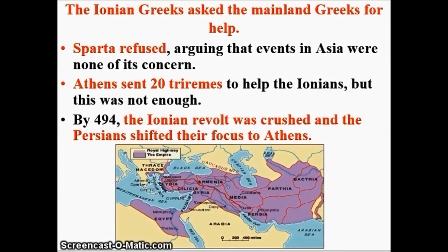The Athenians arrived in Ionia and had an initial success, burning down the provincial capital city of Sardis. But that moment of success was followed by significant reverses, and the Athenians left after a very brief deployment. By involving themselves in Persian business, however, they had drawn the great king's attention, and he would not forget it. The Ionian revolt lasted about five years before it was utterly crushed by the Persians. Once crushed, King Darius turned his attention to punishing Athens — and that is what we will look at in the next video lecture.